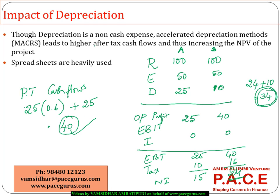This means if I am using accelerated depreciation, because the tax is much lesser in that method, whereas in straight-line the tax is higher, the post-tax cash flows in the straight-line method are lesser by 6 compared to the post-tax cash flows using an accelerated depreciation method.